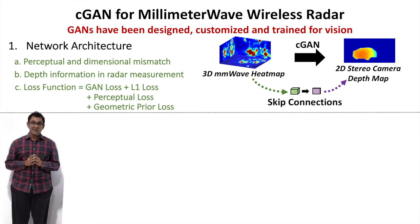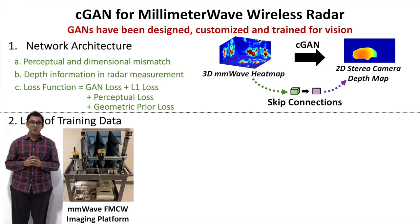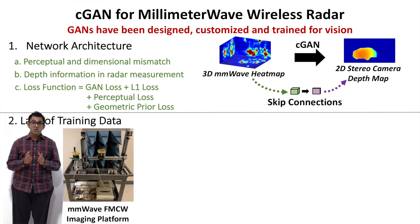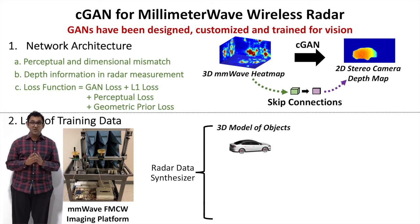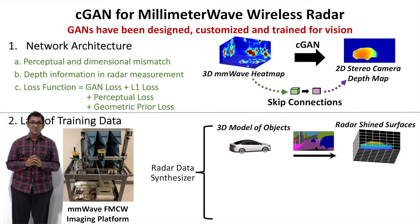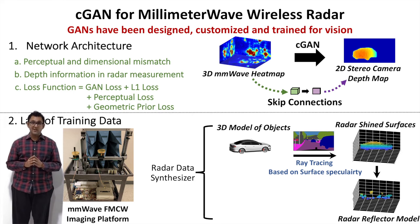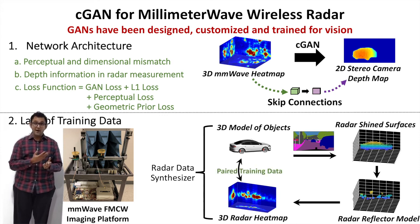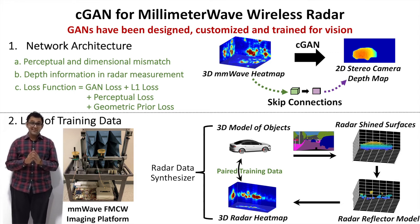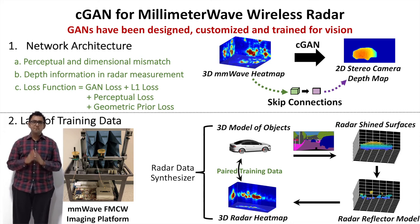To account for the lack of training and testing data, we also build our own 3D millimeter wave imaging platform using a synthetic aperture radar (SAR). However, collecting enough data using such a platform takes too long and is not practical. So we also build our own custom data synthesizer that generates realistic training datasets. It takes 3D CAD models of cars along with real-world street view images to generate radar shine surfaces in the scene, then applies ray tracing to model radar reflectors based on surface specularity. Finally, we simulate radar waveforms and generate heatmaps, which along with ground truth depth maps serve as training data for our GAN. At this point, I will let Jayden take over to present preliminary results and the project vision.